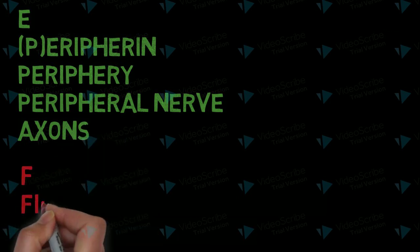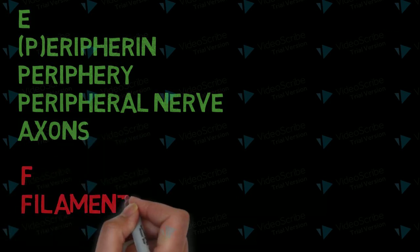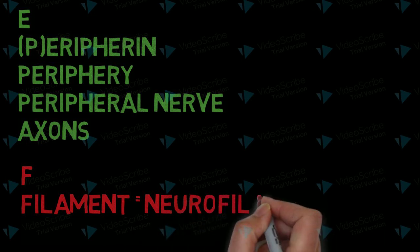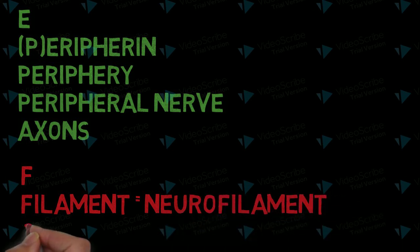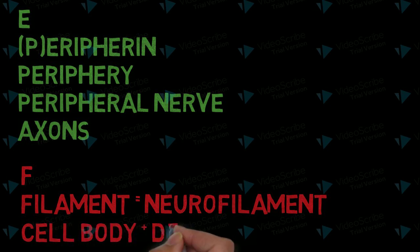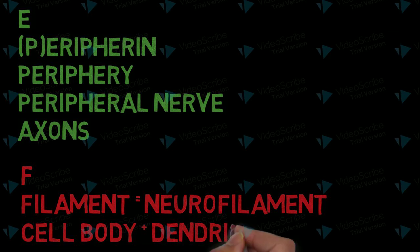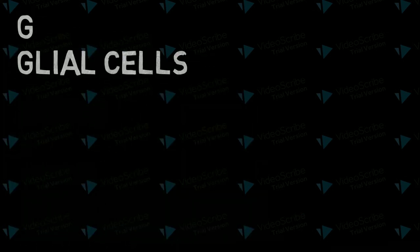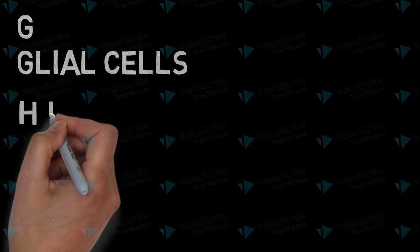And now F for filament. Filament is neurofilament. Neurofilament present in neurons, specifically in cell body and dendrite. Please note that peripherin present in the peripheral nerve axons, and neurofilament present in cell body and dendrite.